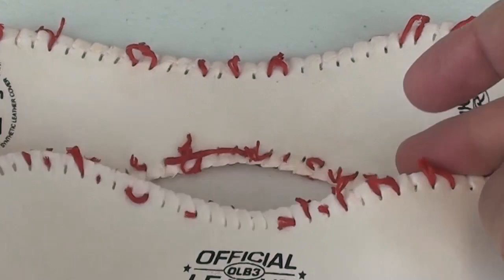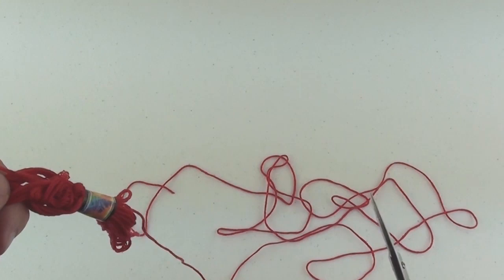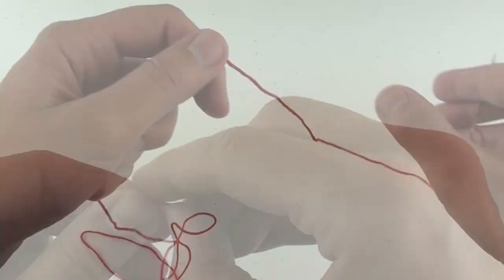Now you'll need some embroidery floss. Any type or color will do. Cut a piece about 40 inches long. Thread a needle with the floss on one end, and on the other end tie a knot. You can even double the knot if you wish.